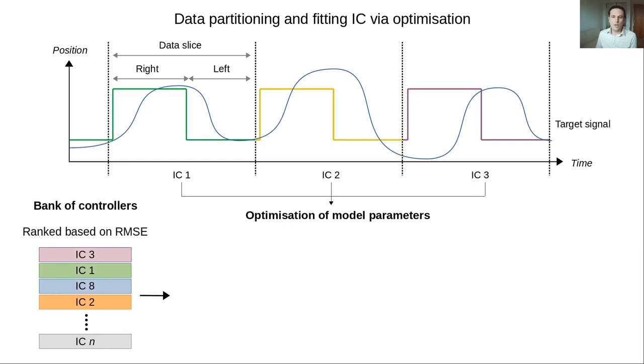A simulation can be created by randomly selecting a controller from the bank and applying the identified parameters for two consecutive trials, before switching to another controller from the bank.